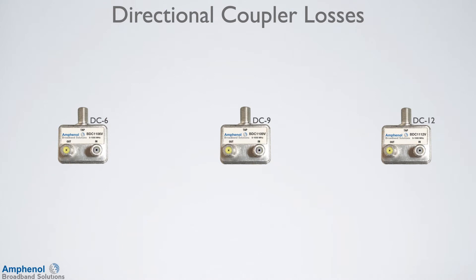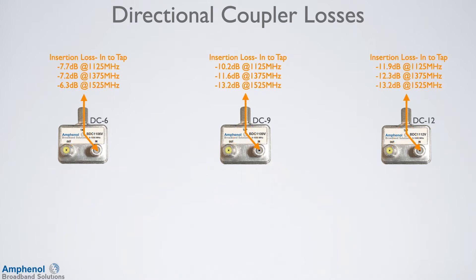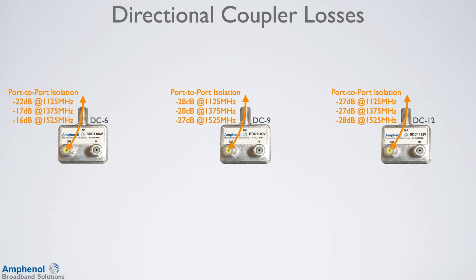In many MDU applications, they use directional couplers to loop the signal from one room to the other. Here I'm showing the DC6, DC9, and DC12 losses. First is the insertion loss between the input-to-output port, next the insertion loss from the input-to-tap port, and last the port-to-port isolation path from the output port to the tap port.